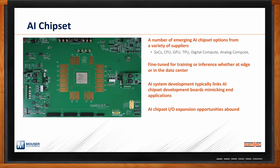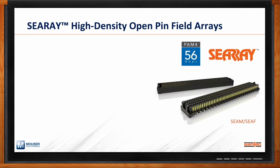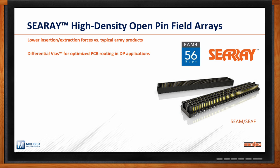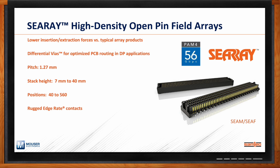What kind of solutions does Samtech offer for these AI chipsets? A number of evaluation platforms have expansion ports that leverage technology from the FPGA ecosystem — we've talked a lot about FMC and FMC+. A connector very prevalent with the AI chipset ecosystem is our C-Ray high-density open pin field array. Features include low insertion and extraction forces for high pin count arrays, differential vias optimized for performance up to 56 gigabit per second per pin, 1.27-millimeter pitch, various stack heights, up to 560 positions, rugged edge-rate contacts, and support for parallel, perpendicular, or coplanar orientations.